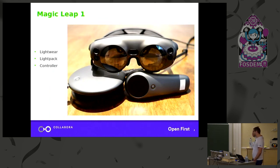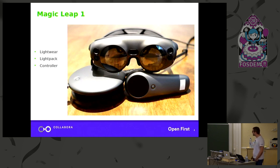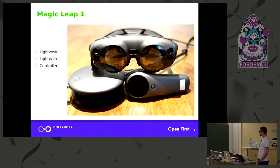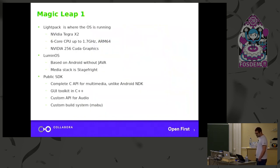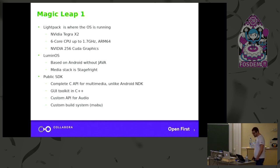Magic Leap has three elements: the glasses, which is the light wave display, and then the light pack — connected by a cable you cannot remove. The light pack is the computer itself, doing all the CPU and GPU work. You also have a controller to manipulate virtual objects. The light pack runs an Nvidia Tegra X2 chipset with six cores and it's ARM64.